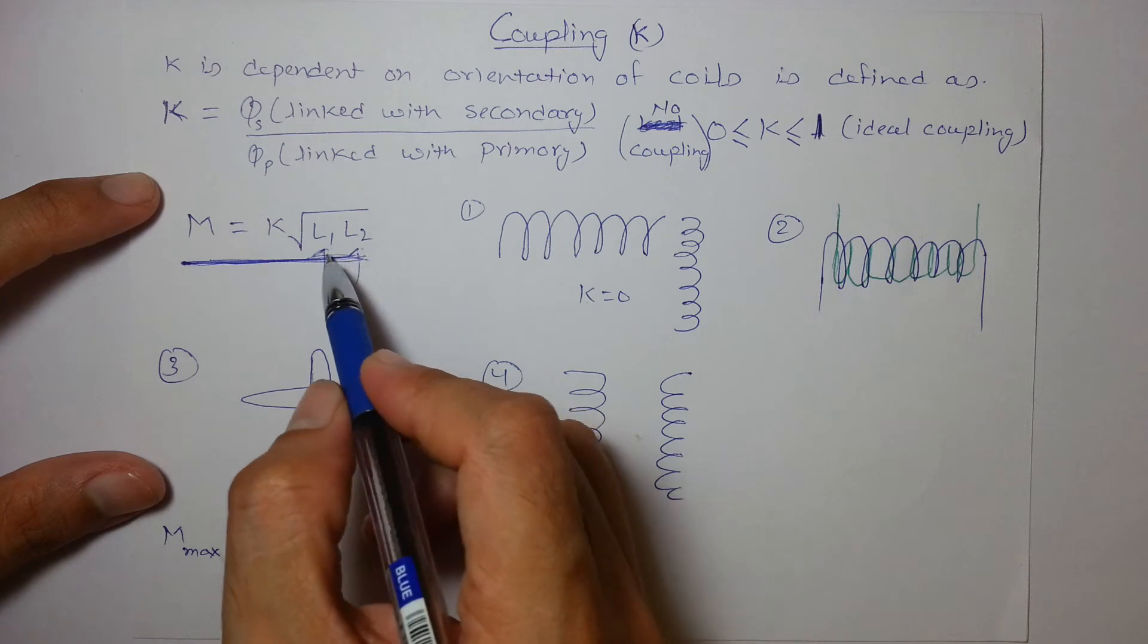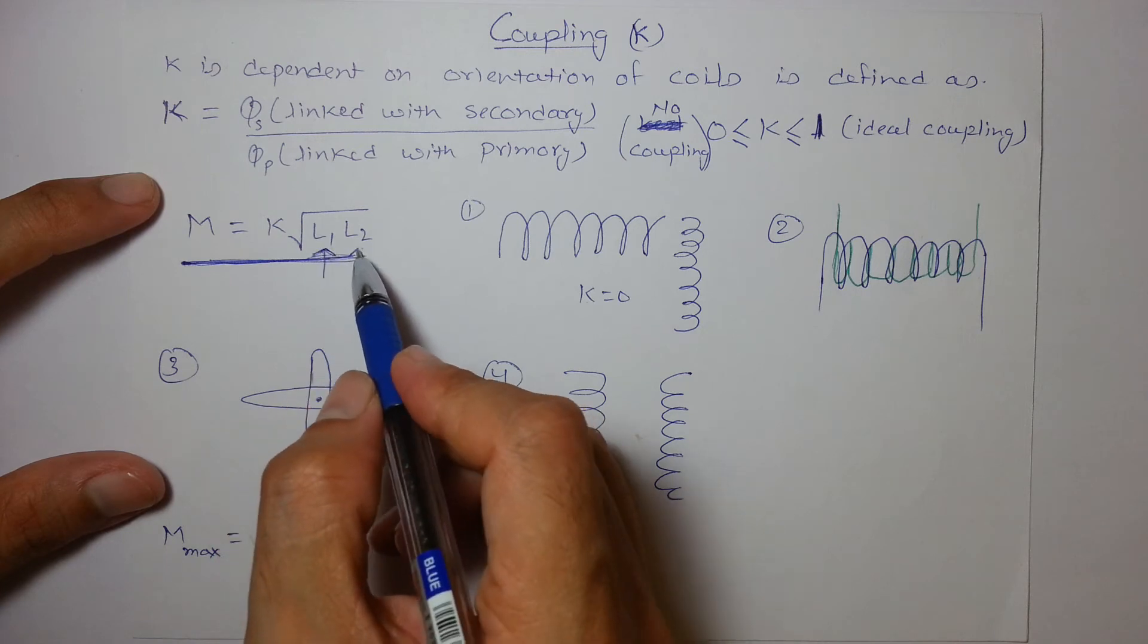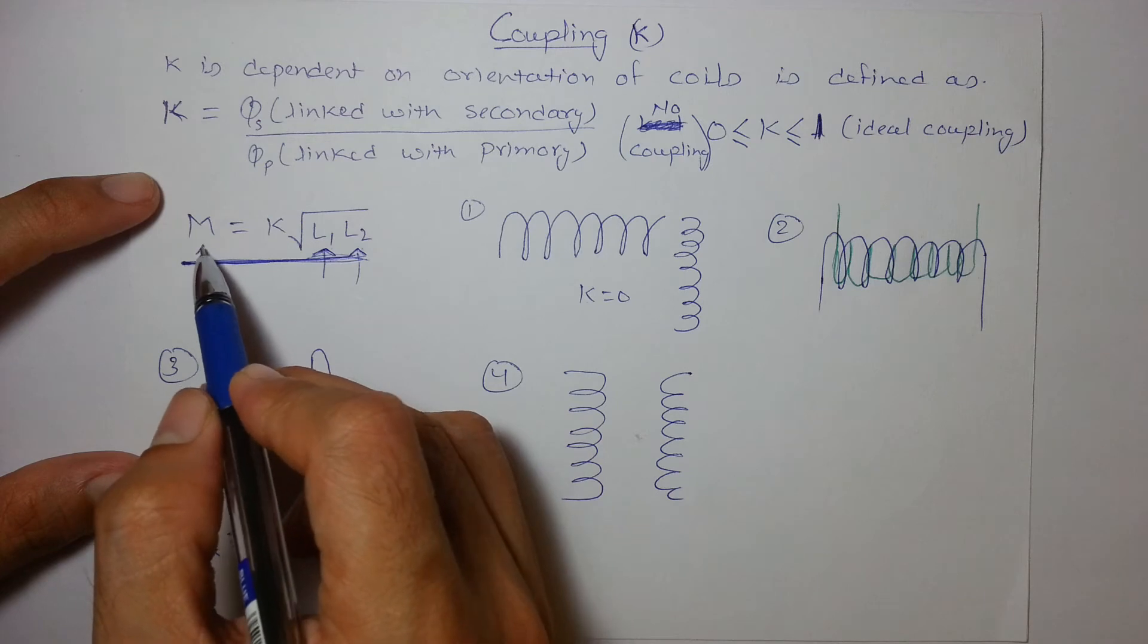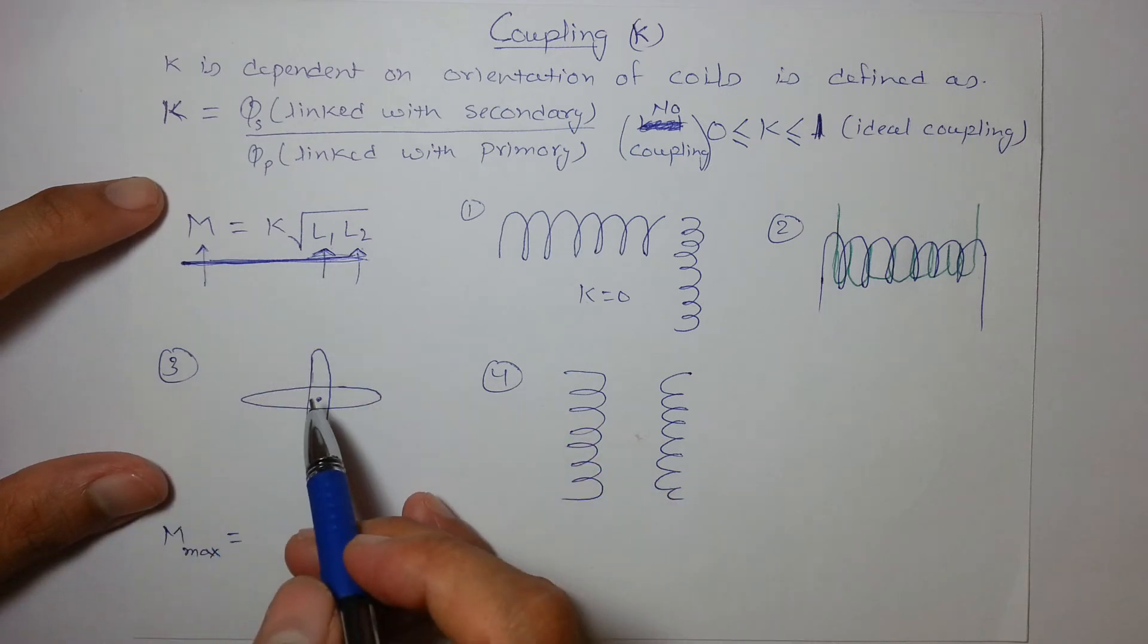Where L1 and L2 are the self inductance of those two coils between which mutual inductance is defined like this.